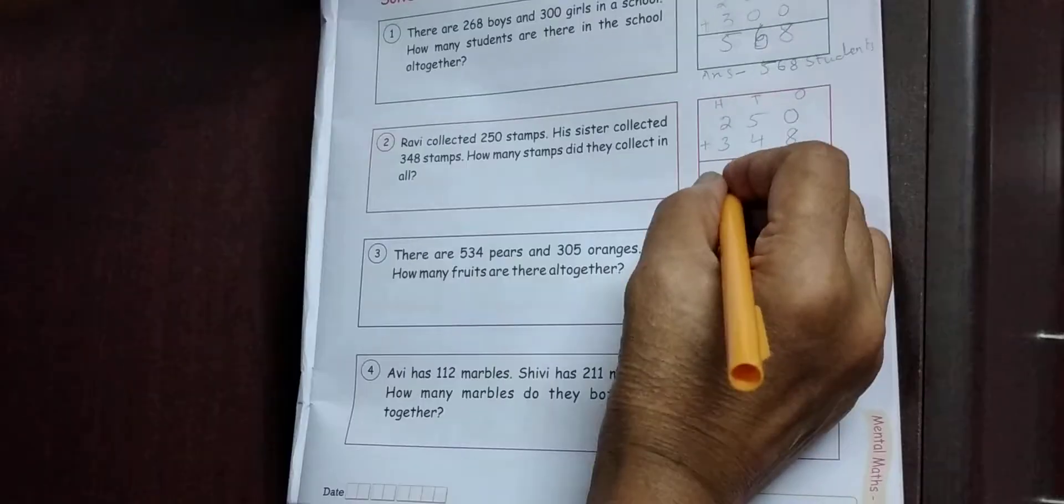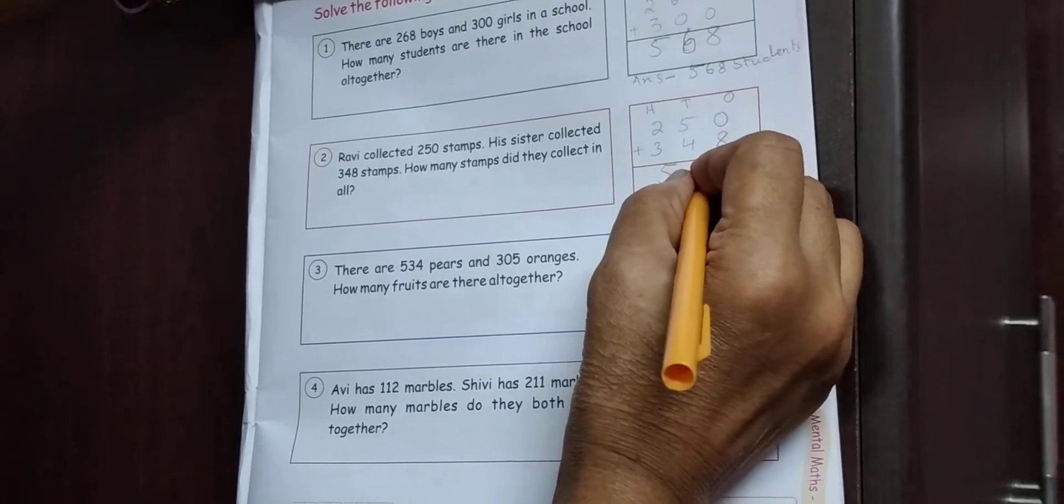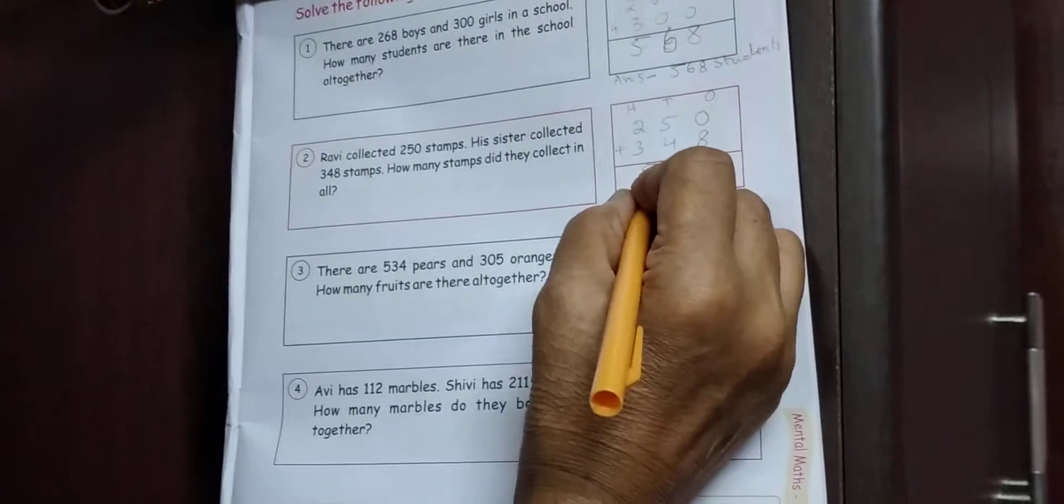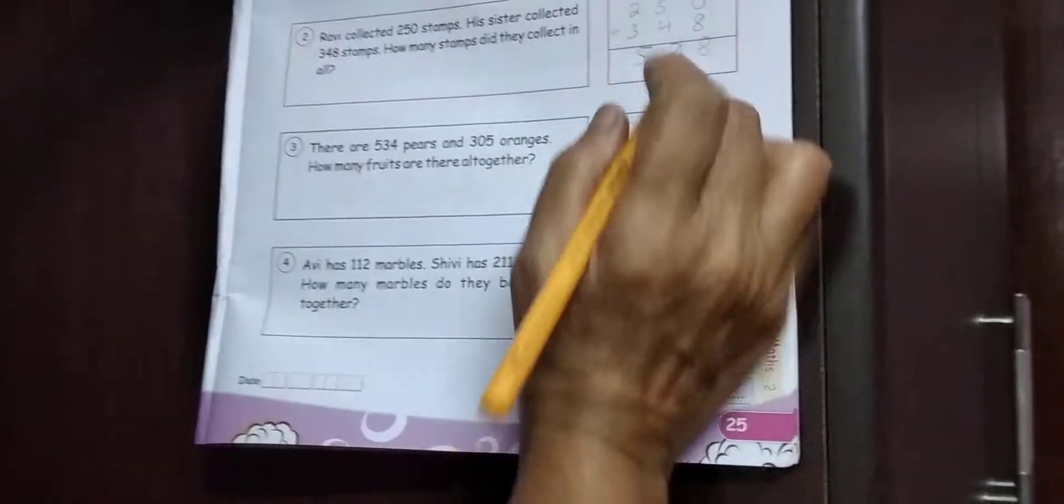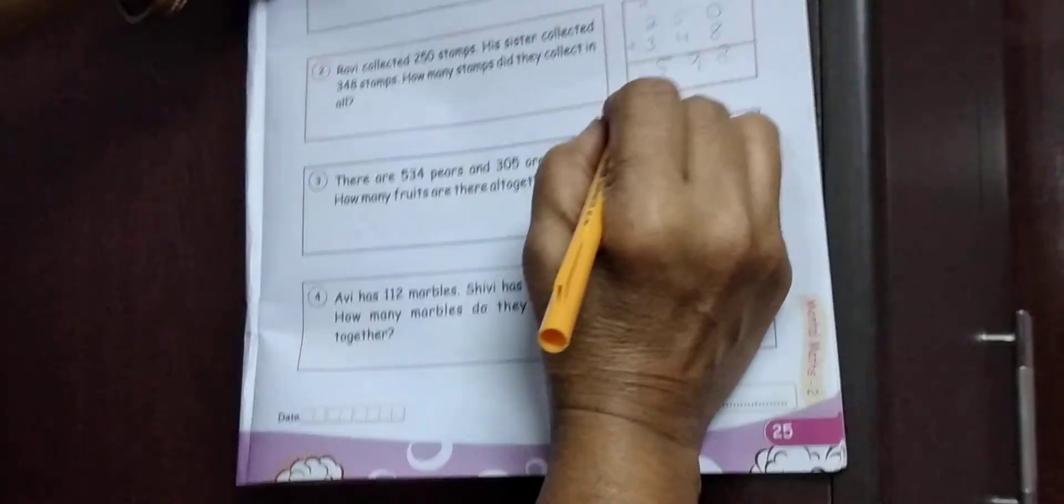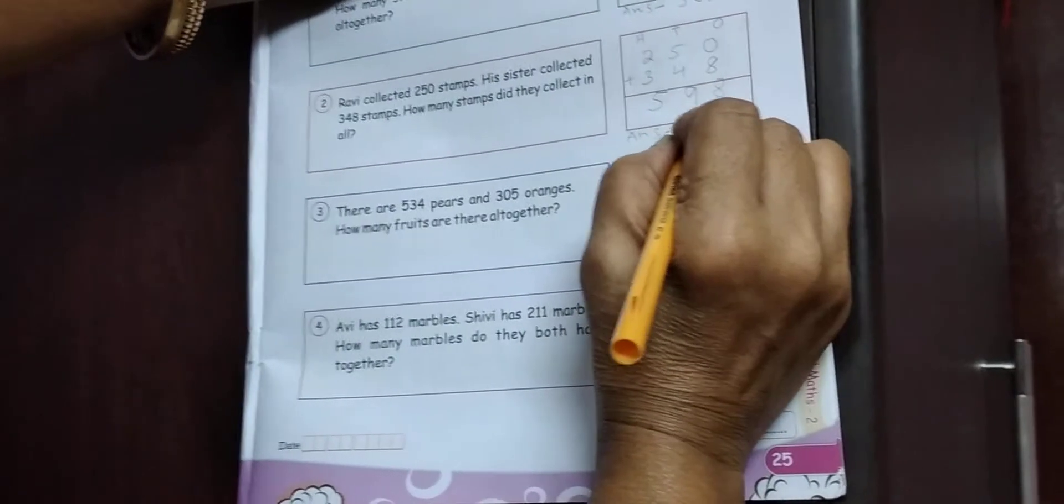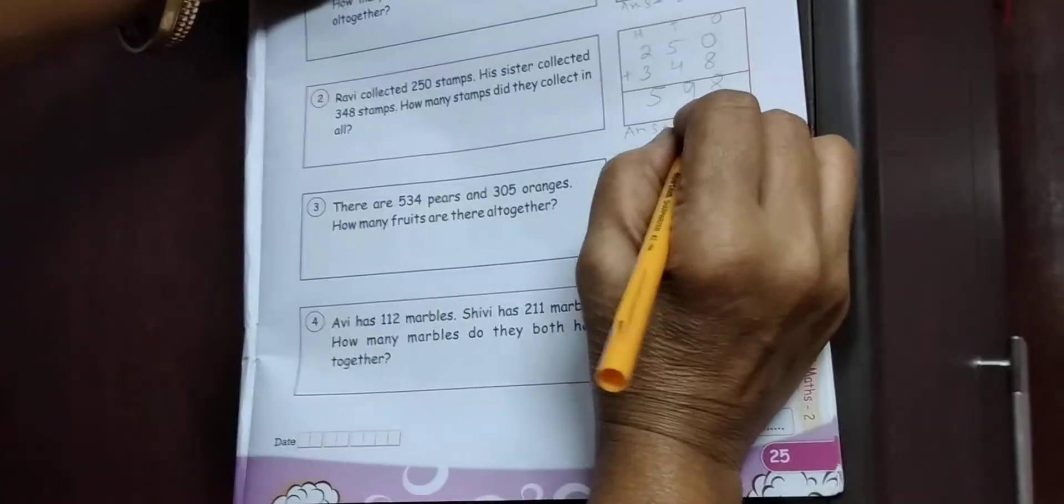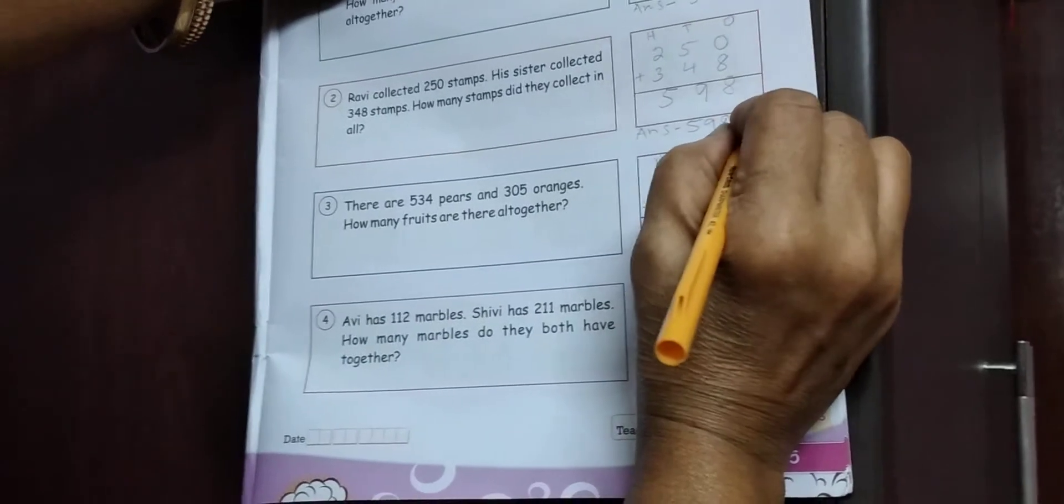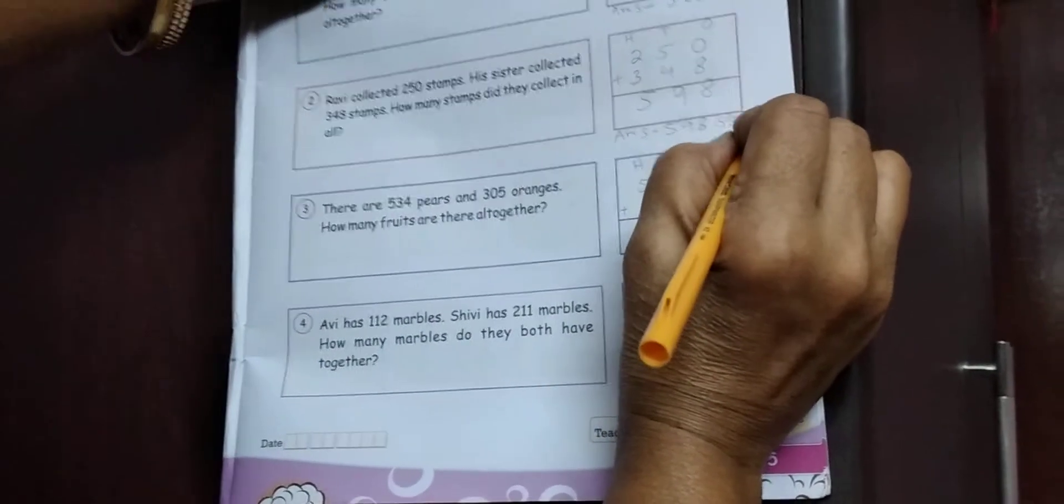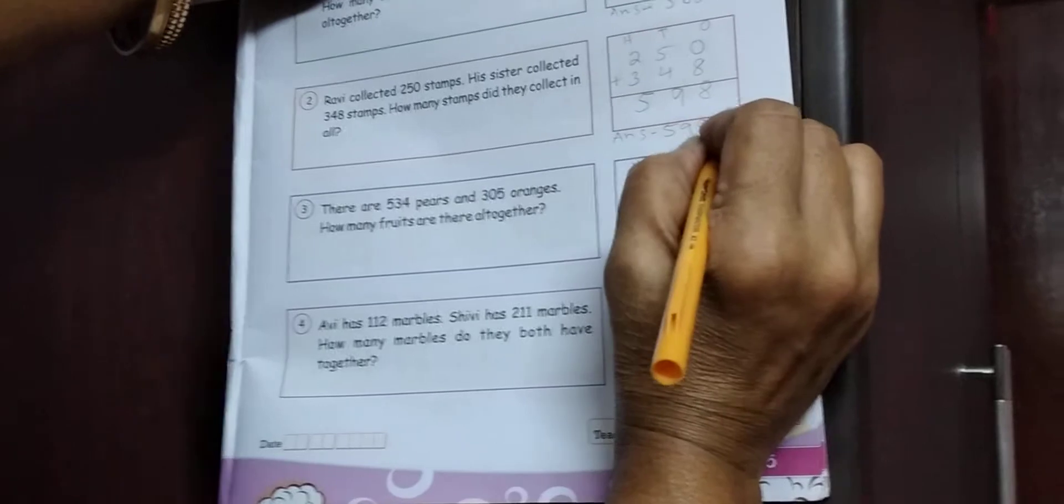598. 500, 9 tens, 8 ones. 598. Kaise answer likho gi? A, N, S. 598 stamps. S, T, A, M, P, S. Stamps. Samaj gyo students? Aise karo gi?